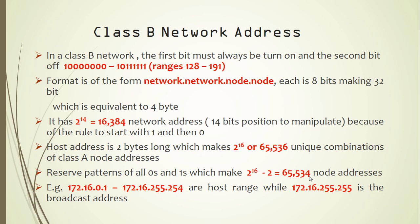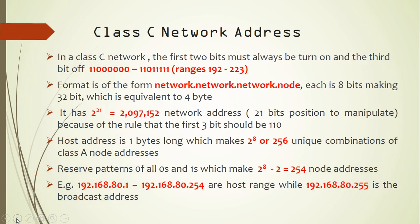An example of a class B network address is 172.16.0.1 to 172.16.255.254. Note that 172.16 is the network path, while the remaining octets form the node path. The broadcast address for each class B network would be 172.16.255.255.